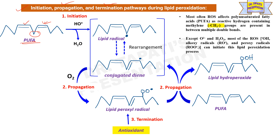Except for O2 minus and H2O2, most ROS elements can initiate the lipid peroxidation process. During initiation, the hydroxyl radical reacts with PUFA, converting it to a lipid radical while releasing water. This is followed by molecular rearrangement of the lipid radical, producing a conjugated diene.